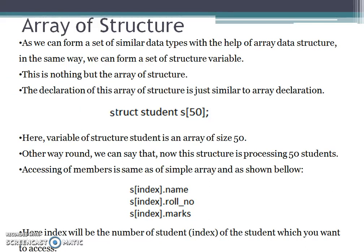Now we'll study array of structure. We all know that an array is a collection of similar data types. Since structure is a user-defined data type, we can form an array of structures. The declaration of an array of structure is similar to a simple array declaration — it may be of type integer, character, or any data type. Here, struct student is a user-defined data type and its variable S is declared as an array of struct student of size 50, meaning the structure can process 50 students.